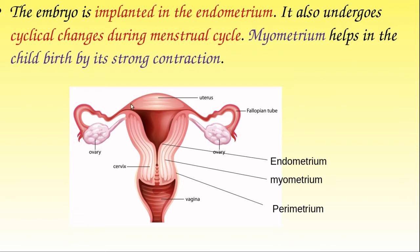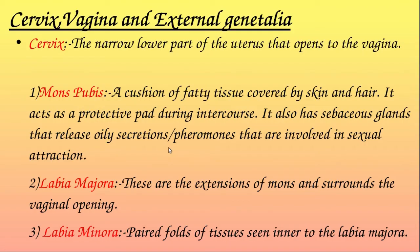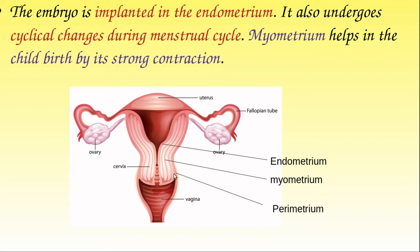The myometrium is the thicker middle layer made of smooth muscles. During childbirth or parturition, these smooth muscles contract vigorously, helping to deliver the baby. The perimetrium is simply the outer covering layer of the uterus.